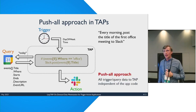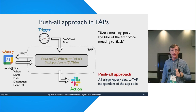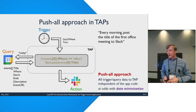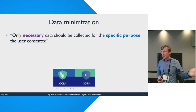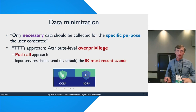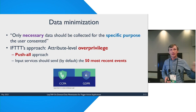What we observe is that the approach is very much 'push all': data from queries is pushed in a coarse-grained way, and only a small portion is needed. This is at odds with data minimization, which requires being careful about data — only collecting what is actually necessary for the purpose of the application. Current approaches focus more on functionality and end up doing over-privileged, coarse-grained pushing rather than being fine-grained.